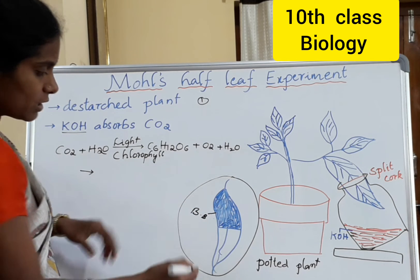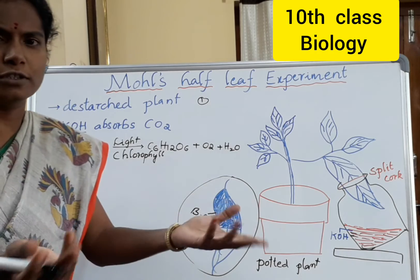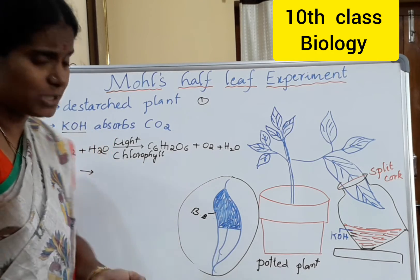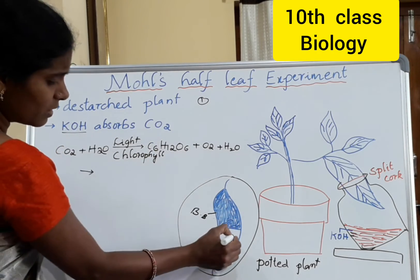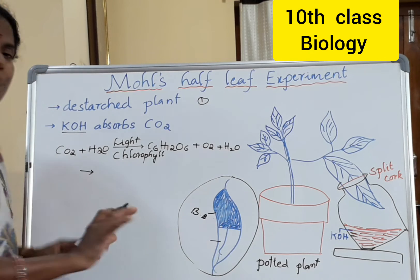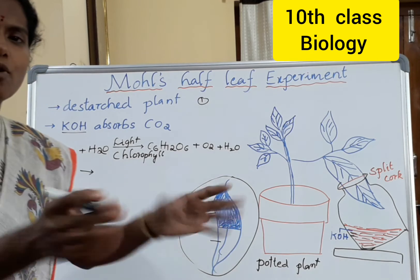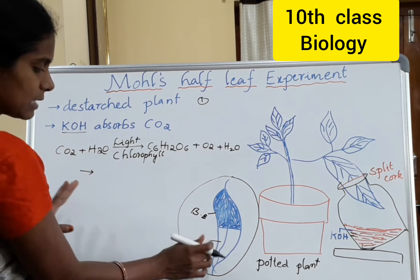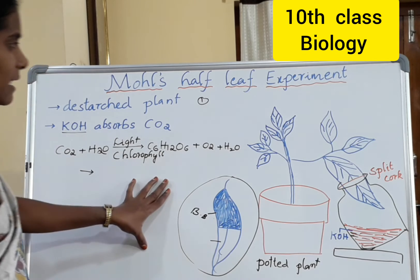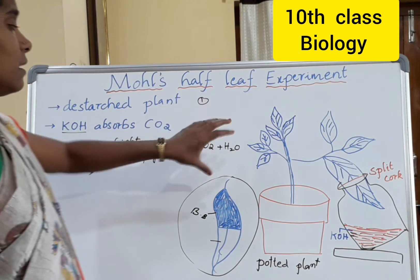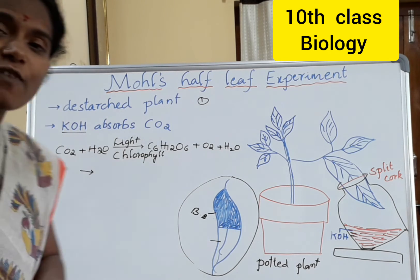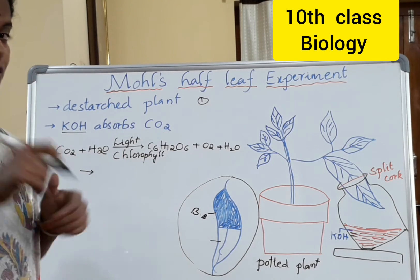If starch is produced, the leaf turns into a bluish-black colour. If not — no CO2 means no food, and food in this sense is starch. So no starch means that leaf becomes a pale colour — colourless. By this experiment we can prove that carbon dioxide is an important factor for photosynthesis.